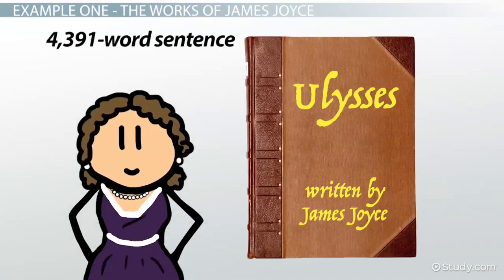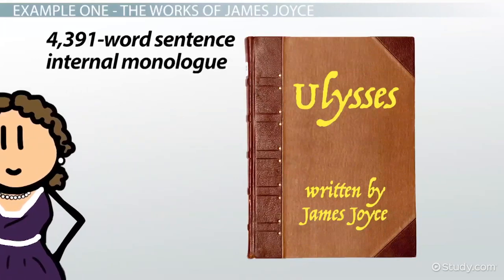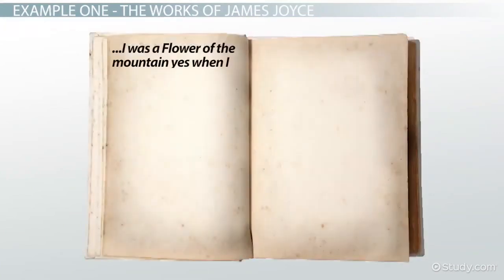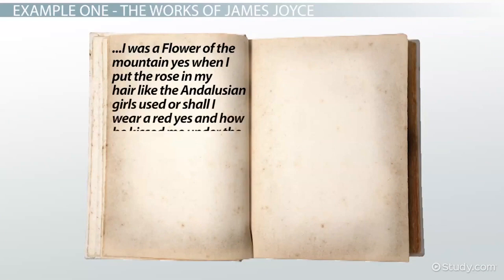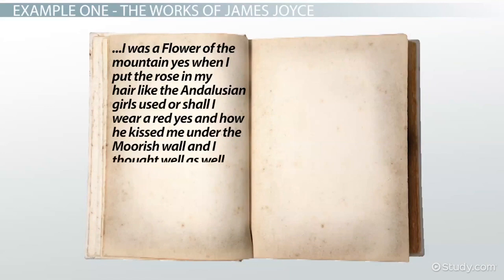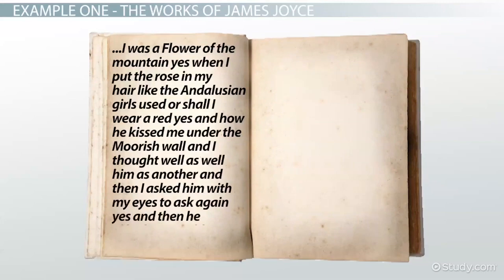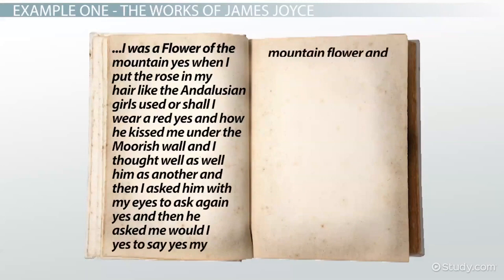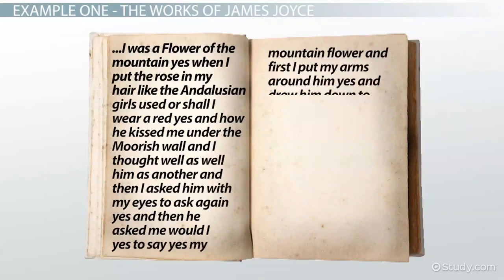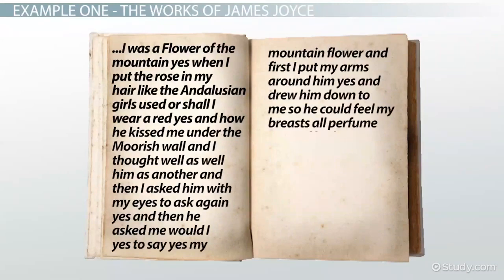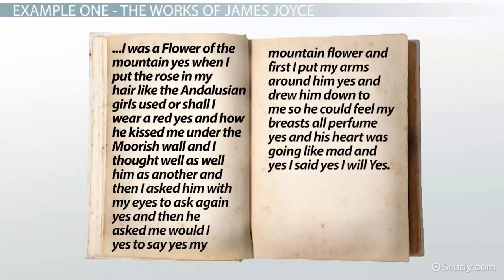All of which is internal monologue. It ends like this: "I was a flower of the mountain yes when I put the rose in my hair like the Andalusian girls used or shall I wear a red yes and how he kissed me under the Moorish wall and I thought well as well him as another and then I asked him with my eyes to ask again yes and then he asked me would I yes to say yes my mountain flower and first I put my arms around him yes and drew him down to me so he could feel my breasts all perfume yes and his heart was going like mad and yes I said yes I will yes."